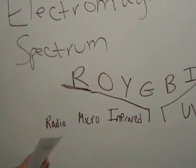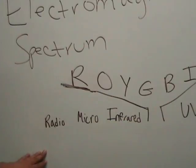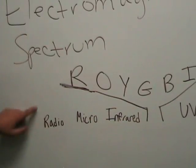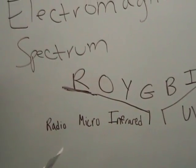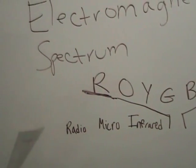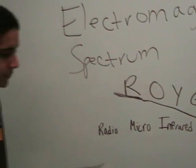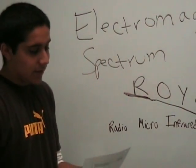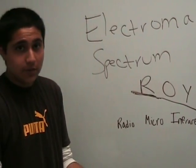On this end over here we have radio waves, which are basically used for radio signals and they carry signals from television sets and cell phones.